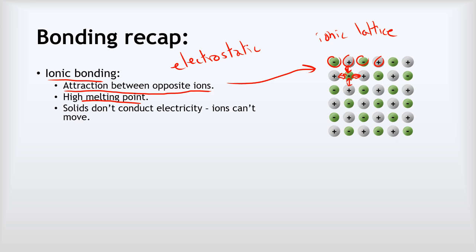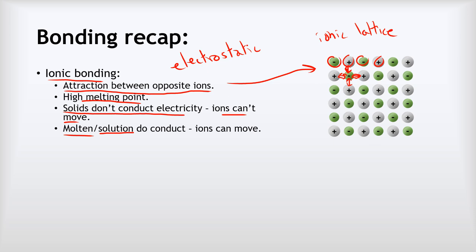When ionic substances are solid they don't conduct electricity because the ions can't move. However, if we melt them by heating or dissolve them into solution, then they do conduct electricity because the ions are now free to move.